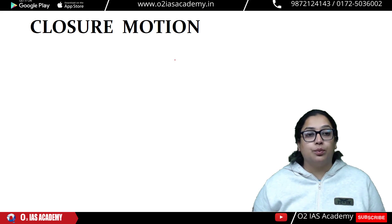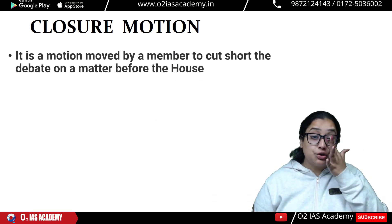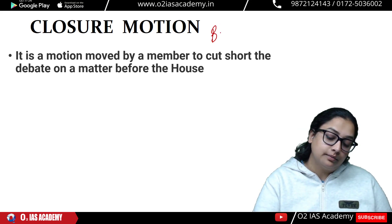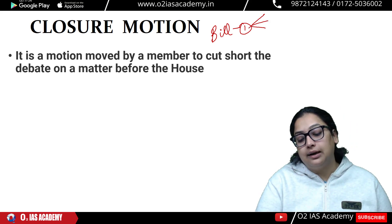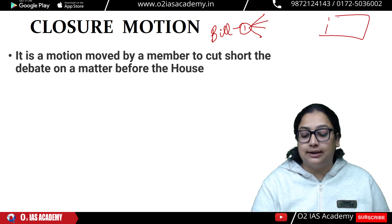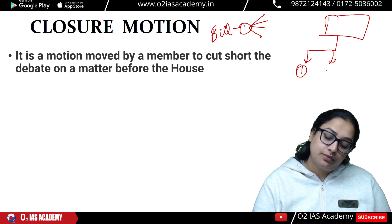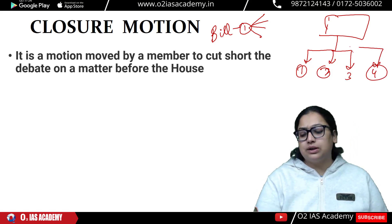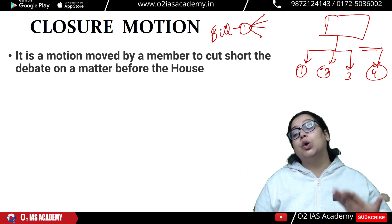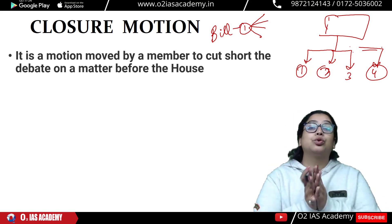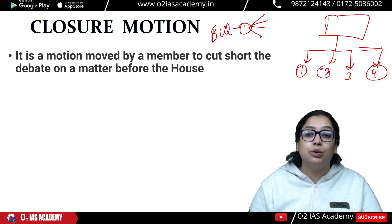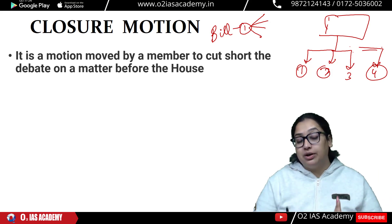Next is Closure Motion. It is a motion moved by a member to cut short the debate on a matter before the house. When a bill is being passed, there are many debates and discussions, and closure motion is used to stop them. Within closure motion there are different types. A bill can have many clauses — parts 1, 2, 3, 4 — and discussions can happen on each part.